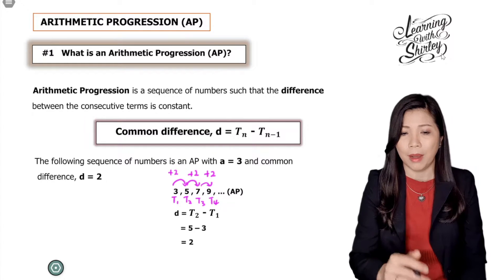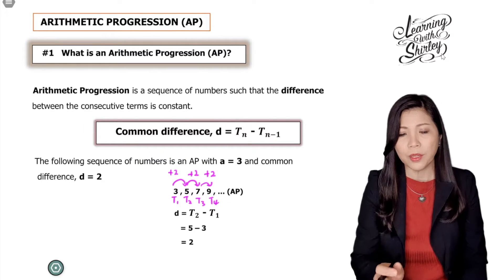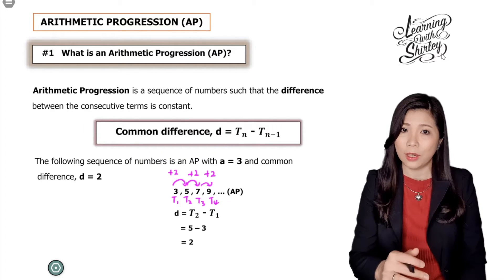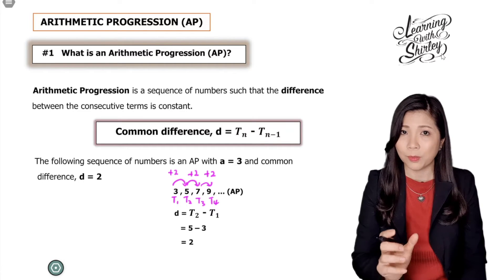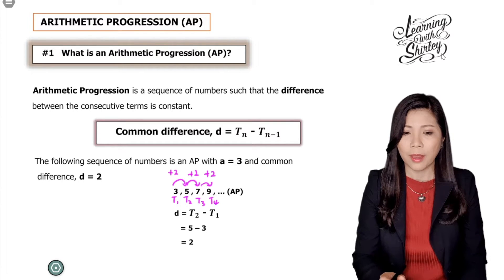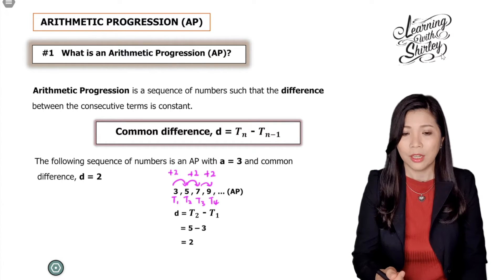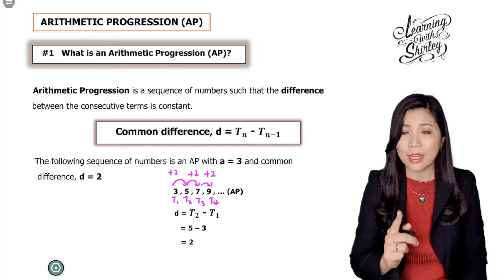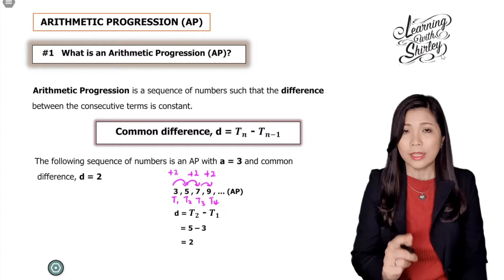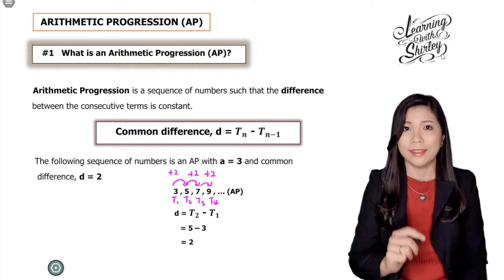AP is either plus or minus. Normally we use t2 minus t1 because the numbers are smaller, but it also depends on the question. Remember that d is equal to tn minus tn minus 1.